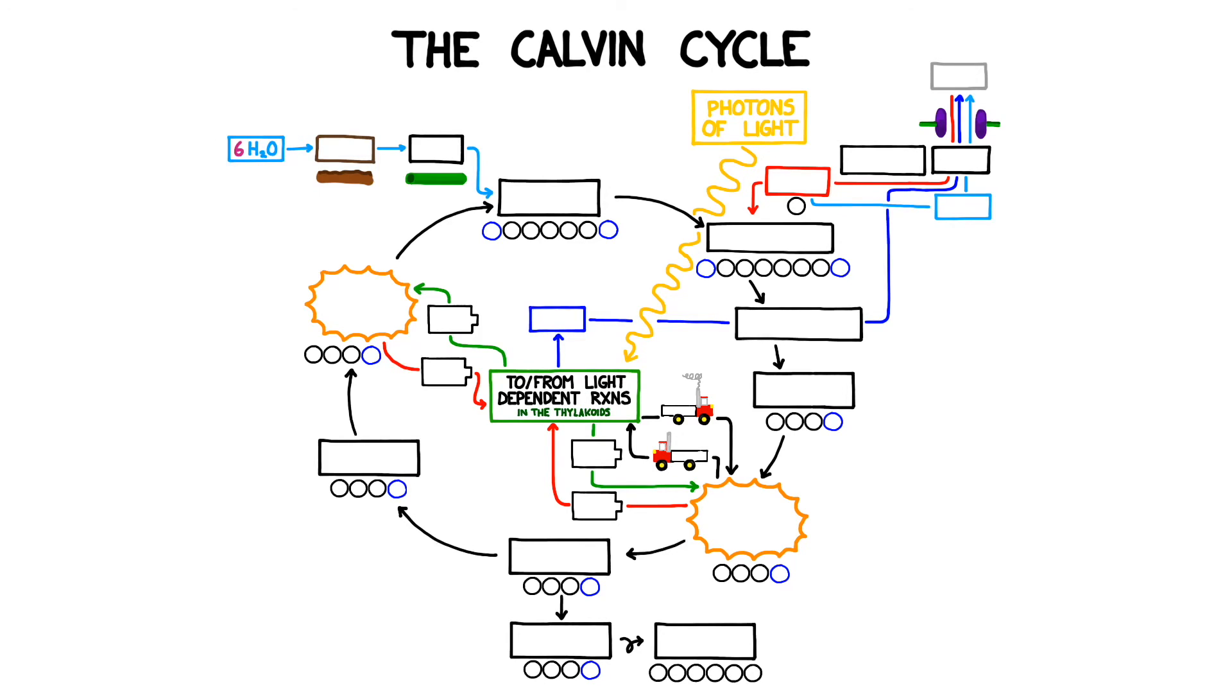The next reagent, water, will be crucial in both the light dependent reactions and in the Calvin cycle. It comes from the soil and enters the plant through the roots and travels through special tubes called xylem. Six water molecules will be added to the Calvin cycle in the first step.